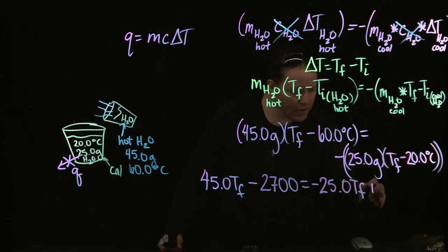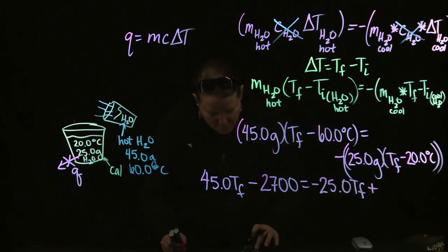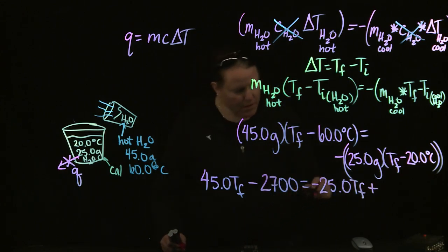I'm going to do the negative and the 25.0. 25 times 20.0 is 500. So negative 25.0 T_F, negative 25.0 times 20.0 gives me a 500.